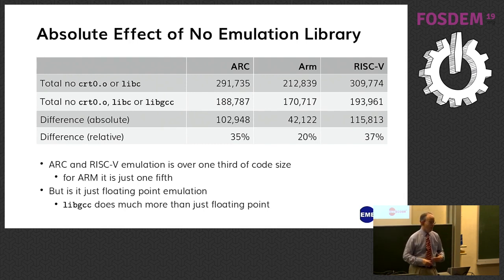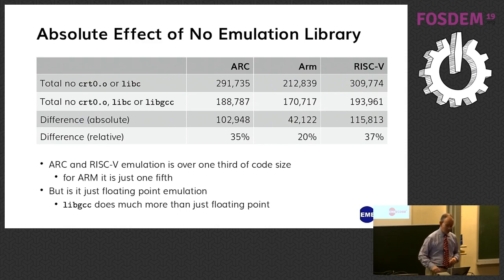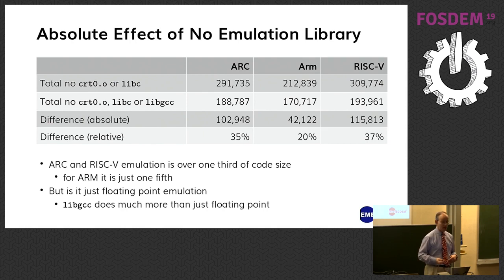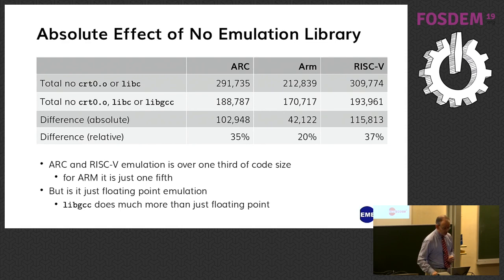When you do it for ARM, you only get rid of a fifth of the code — ARM clearly has a much more compact floating point emulation. I should note that I've taken away all of libGCC, and libGCC does more than just floating point emulation, so we do need to check it is the floating point emulation and not some other emulation we're worrying about.